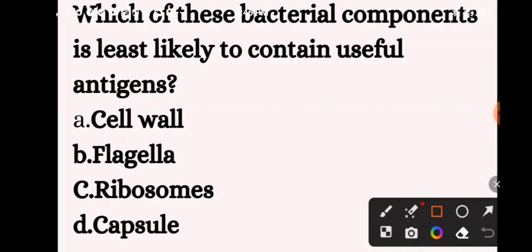Next question: Which of these bacterial components is least likely to contain useful antigens? Cell wall, flagella, ribosomes, or capsule. The correct answer is ribosomes.